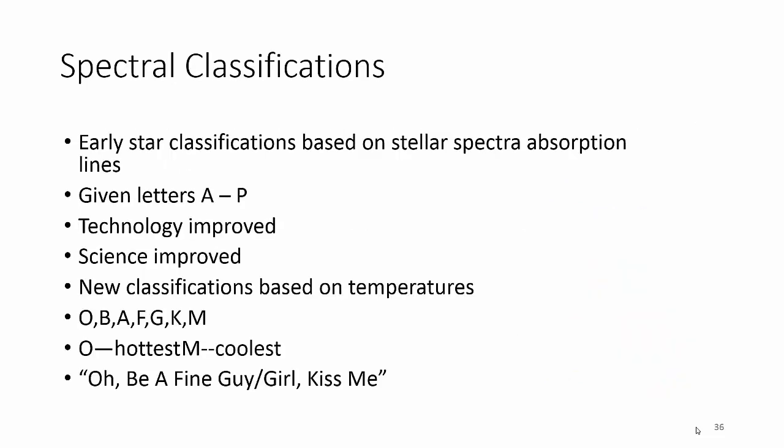Stars were classified by letters A through P, but then as science got better, new classifications came out based on the temperatures. Rather than renaming everything, they just reordered it. So it's O-B-A-F-G-K-M, where O is the hottest and M is the coolest. And the little acronym they use to remember it is Oh Be A Fine Guy-Girl Kiss Me.